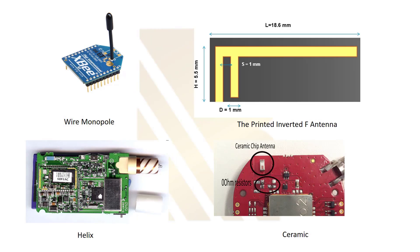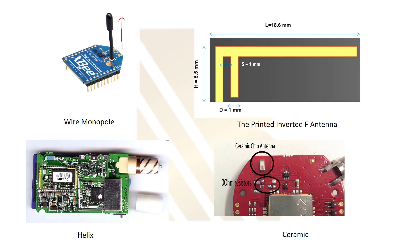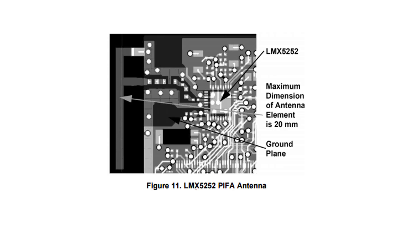Here are examples of actual Bluetooth devices. This is a wire monopole — it is not the best option because it projects above the PCB. This is a helix antenna, with a wire and a reflector structure. This is a ceramic antenna, which is really small — about the size of a resistor. The last commonly used one is the inverted F antenna, shaped like the letter F. We can see this antenna implemented in a chip such as the LMX5252, which is a Bluetooth chip, with the antenna visible on the chip.